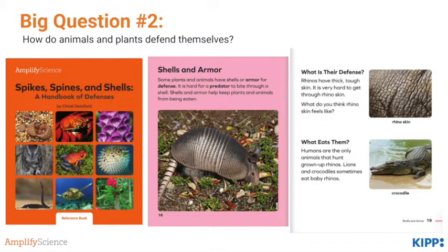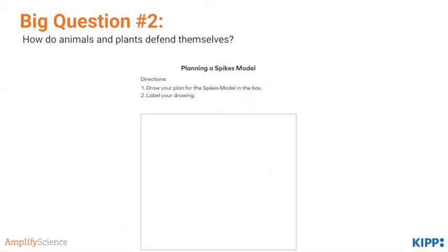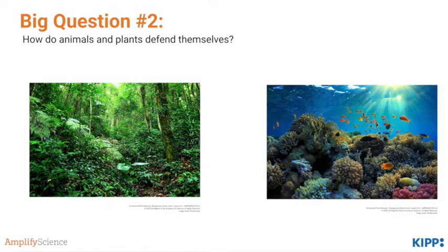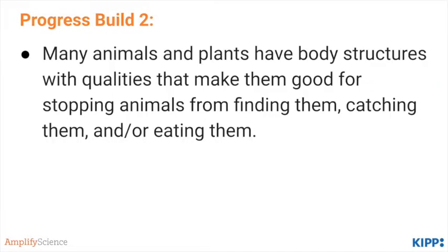Students learn about key defenses such as shells and armor, spikes, poison, and camouflage. They then model with clay and other materials each of these defenses that plants and animals use by making a physical model, drawing it, and labeling it. They investigate camouflage as well, exploring how animals might blend into different habitats.